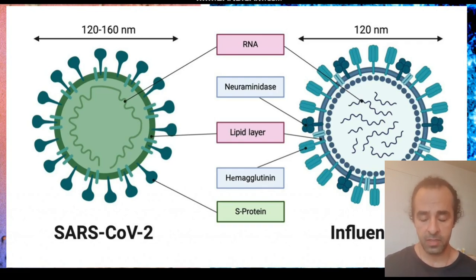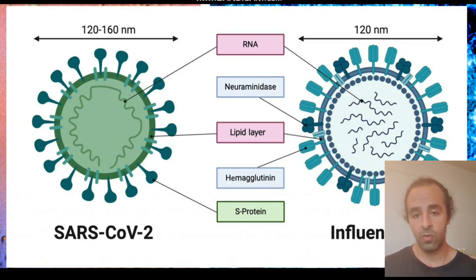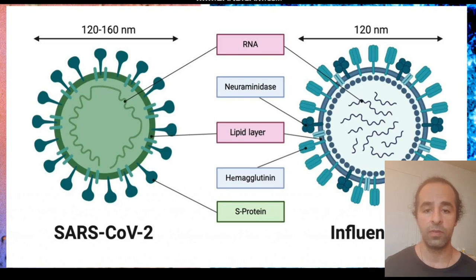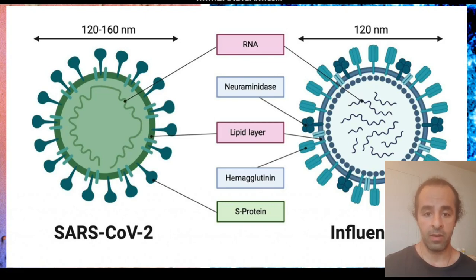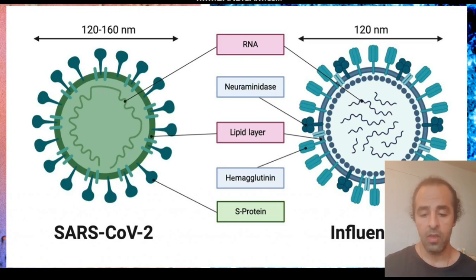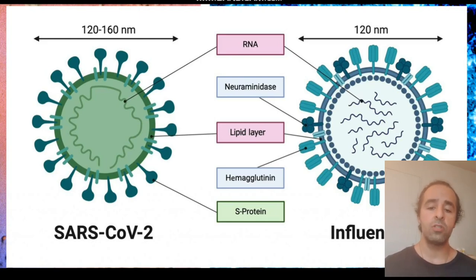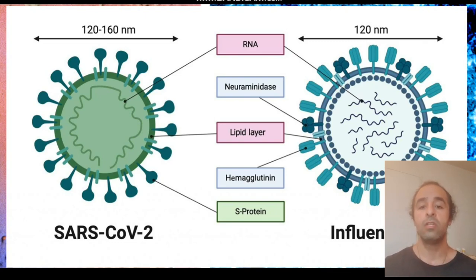The main difference between the influenza A virus, which includes H1N1, and SARS-CoV-2 is the protein material on the surface that is in charge of infecting other cells. For coronaviruses, it is the S protein, or spike protein, that links to the receptors of the cell. For influenza A virus, there are two types of protein: hemagglutinin and neuraminidase, which are responsible for attaching to and infecting the cell.